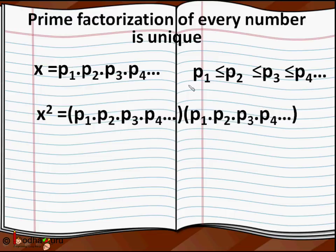We can say x equals p₁ into p₂ into p₃ into p₄ and so on, where p₁ is less than p₂ is less than p₃ and so on. If we square the number x, each prime number would also be doubled, like x² would be (p₁·p₂·p₃·p₄...) multiplied by (p₁·p₂·p₃·p₄...).